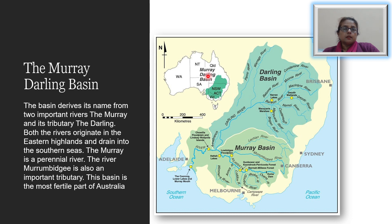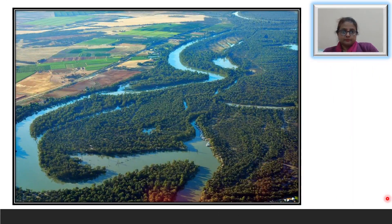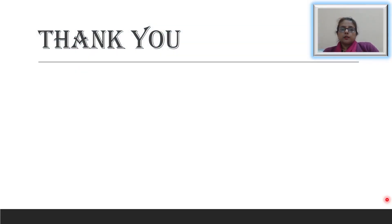The Murray-Darling Basin is mostly found in New South Wales and parts of southern Queensland. This basin is the most fertile part of Australia. Today we learned about two very important physical features of Australia — the Western Plateau and the Central Lowlands. We will continue with the same topic in the next module. Thank you.